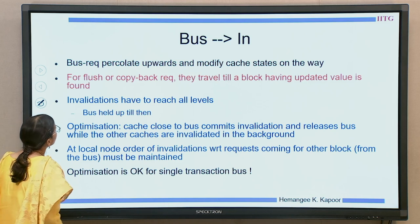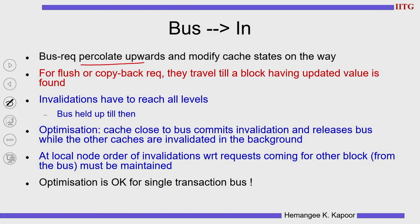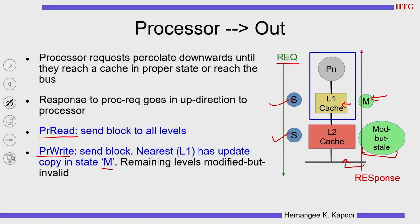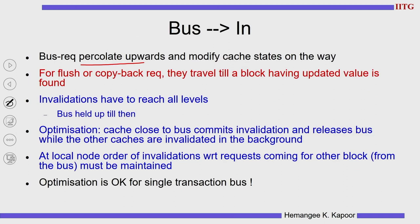Now for requests from the bus traveling inward — bus requests have to propagate upwards until they find the block in the correct state. If a request comes onto the bus and L2's snooper sees it is simply a read request, it can take care of it. But if it is a write request and this node has the data in modified state, then L2 has to go up to L1, retrieve the updated data, and send it out onto the bus. If the request is to flush the block, we must travel upward from L2 to L1 to find the block in the correct state. For three levels of cache, this means three-level travel.